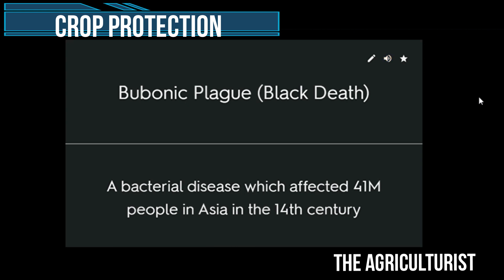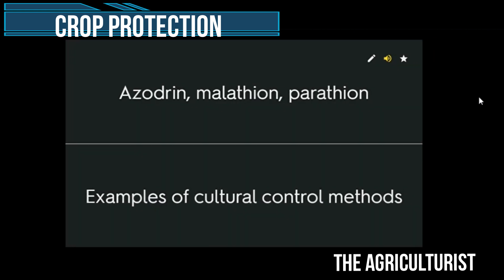Bubonic plague — a bacterial disease which affected 41 million people in Asia in the 14th century. Azadrin, malathion, parathion — examples of organophosphate insecticides.